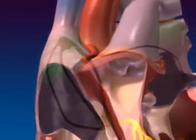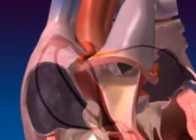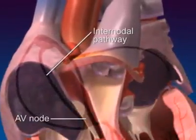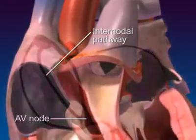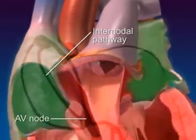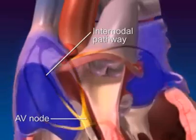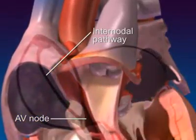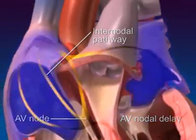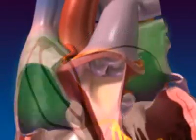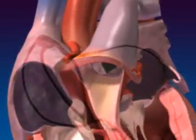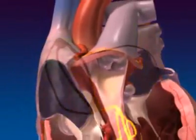The impulses generated by the SA node also rapidly spread through the internodal pathway to the atrioventricular or AV node at the base of the right atrium. The AV node is the only point of electrical contact between the atria and ventricles. Here, the impulse is briefly slowed, allowing the atria to contract and empty their contents into the ventricles before ventricular depolarization and contraction occur.